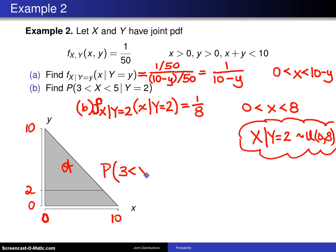So finally to answer the question the probability that X falls between 3 and 5 given Y is equal to 2 that probability can be calculated by integrating the conditional probability density function 1/8 with respect to x between 3 and 5 and that integral turns out to be x over 8.